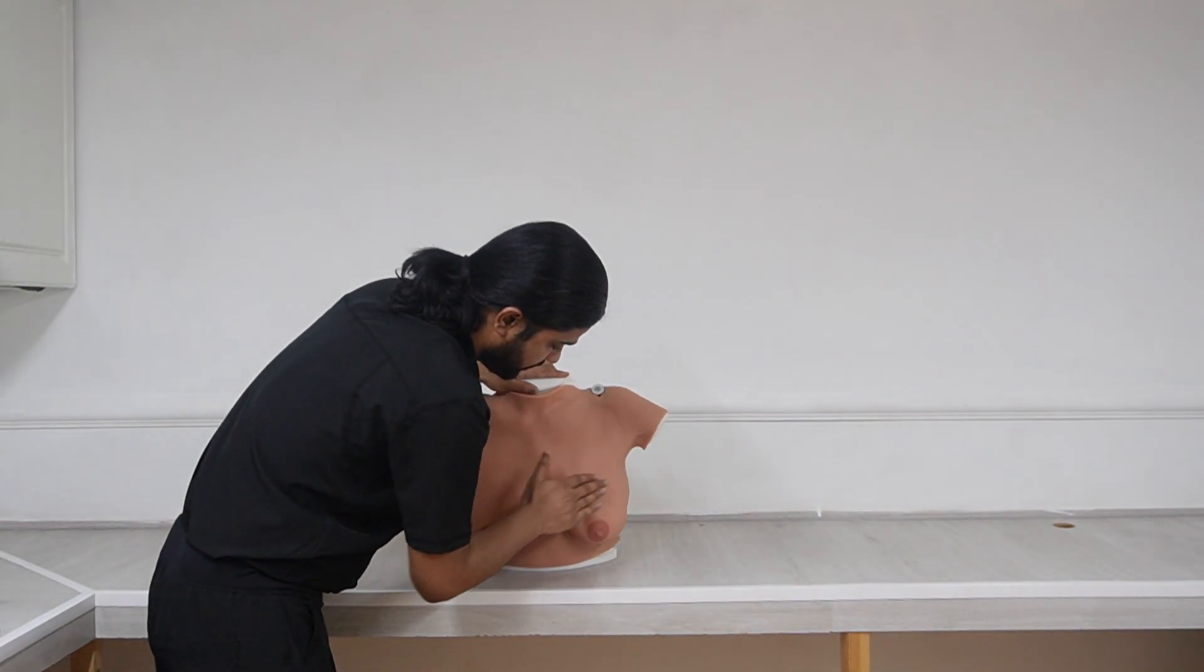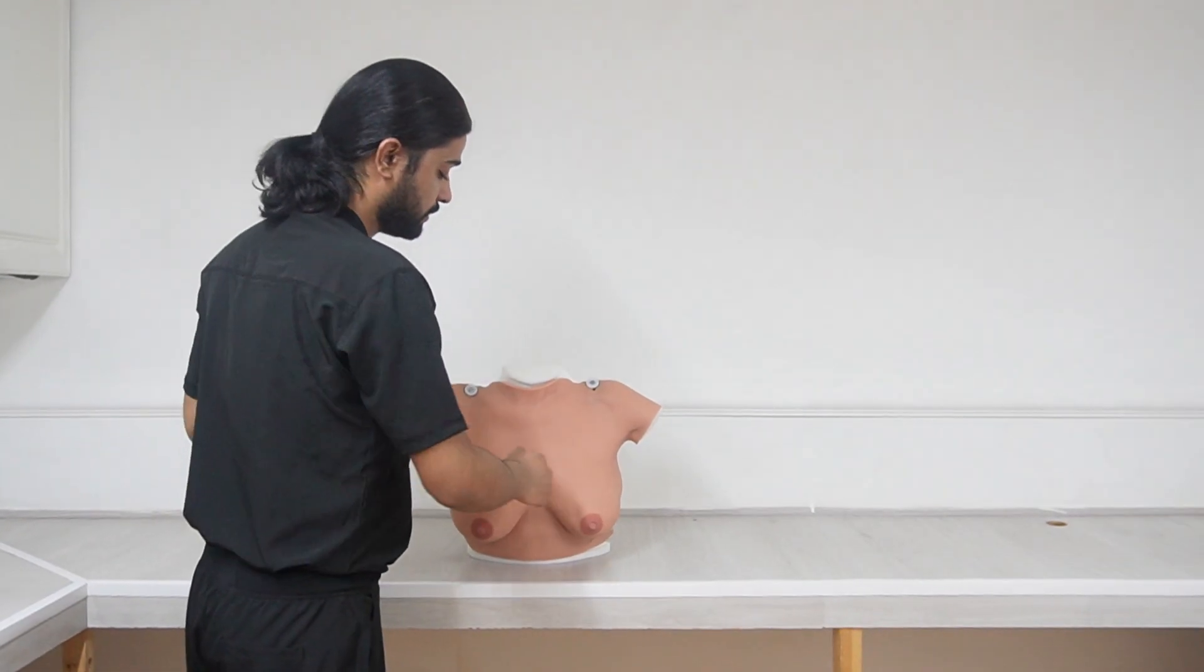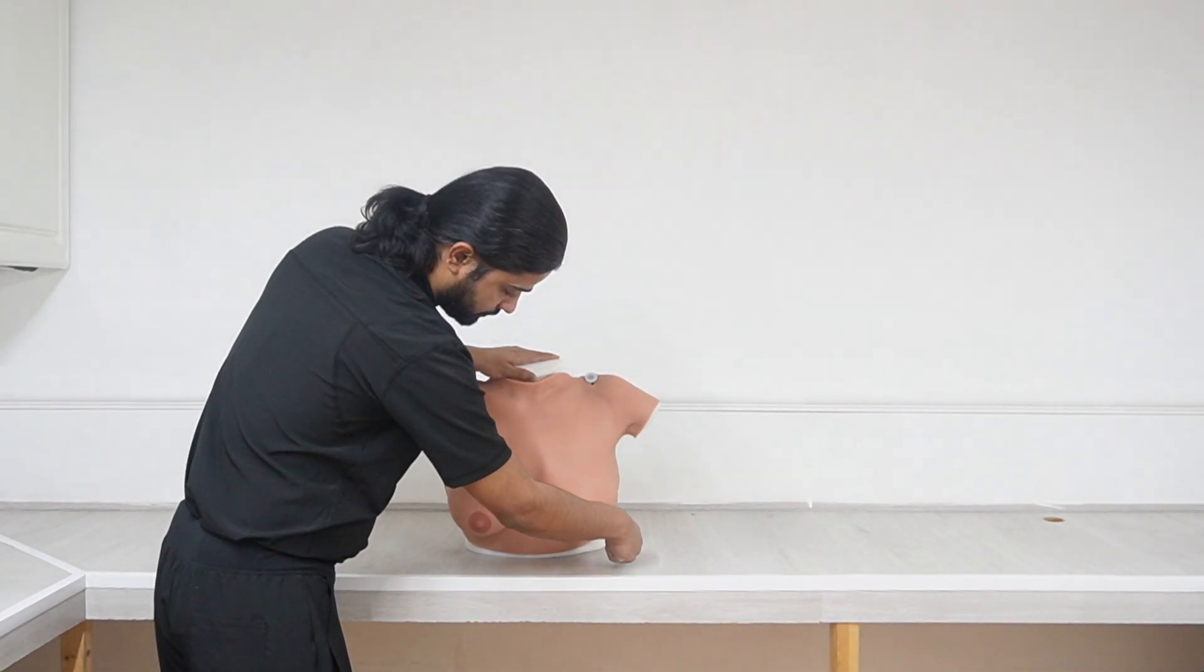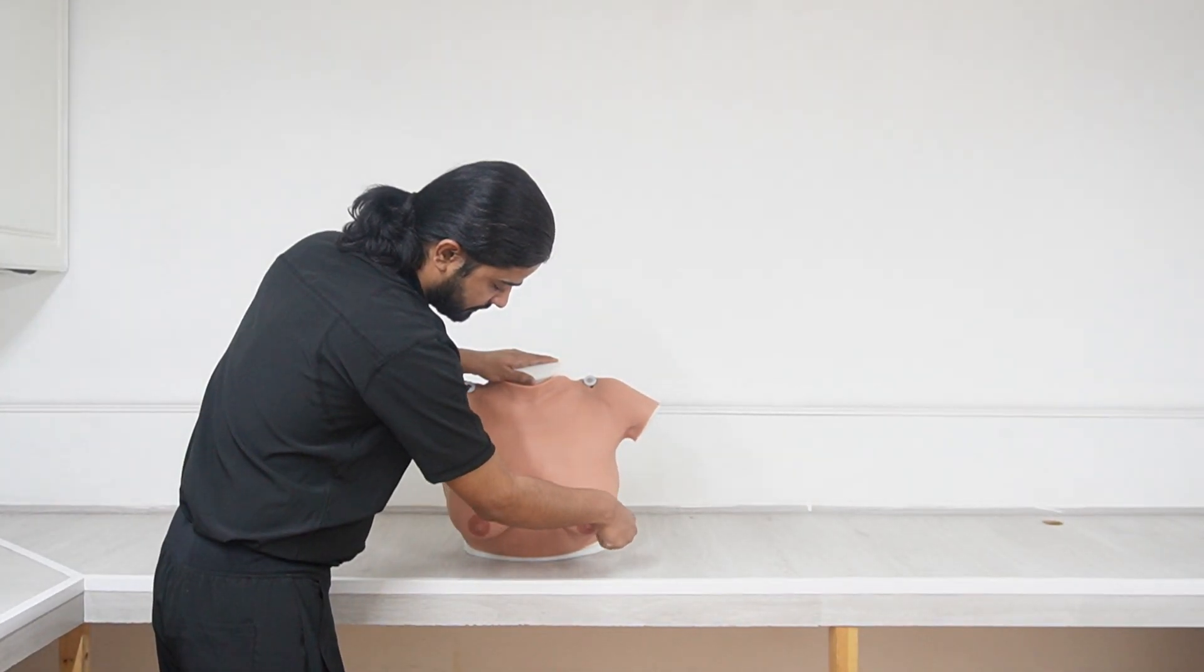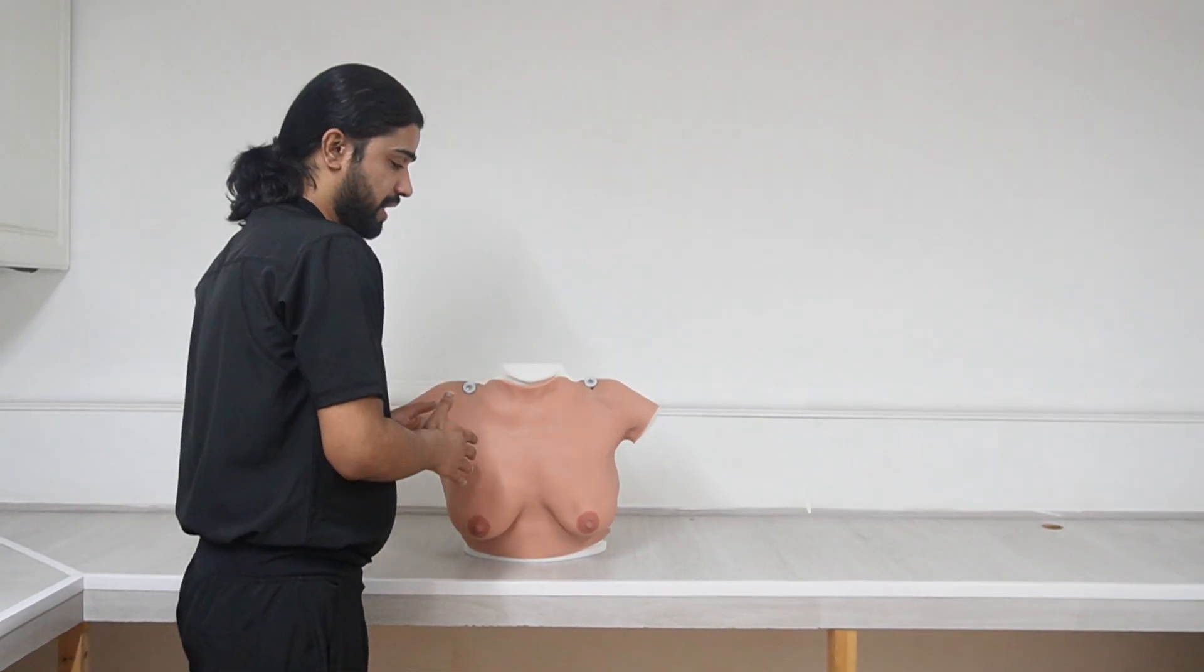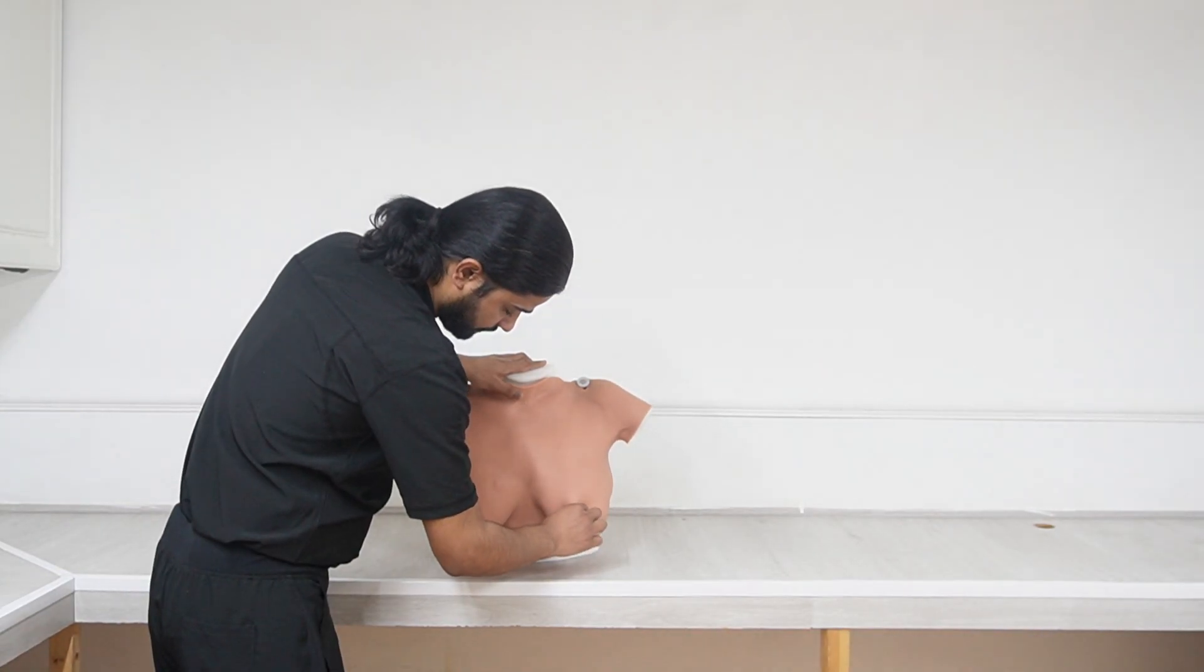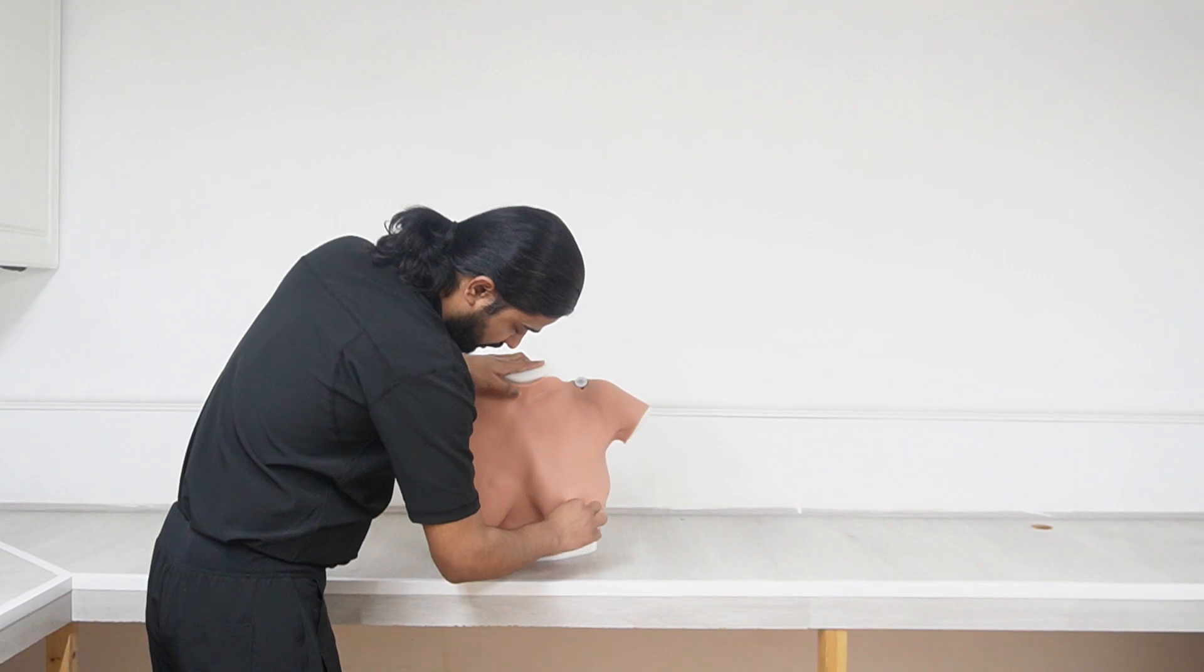Next thing would be periareolar area palpation with your thumb. Always try to avoid touching the nipple. After that, if you feel any lump you need to comment on that as well. There is a lump in this breast as well, so it is 2 by 2, fixed on underlying structures, not fixed on overlying skin.